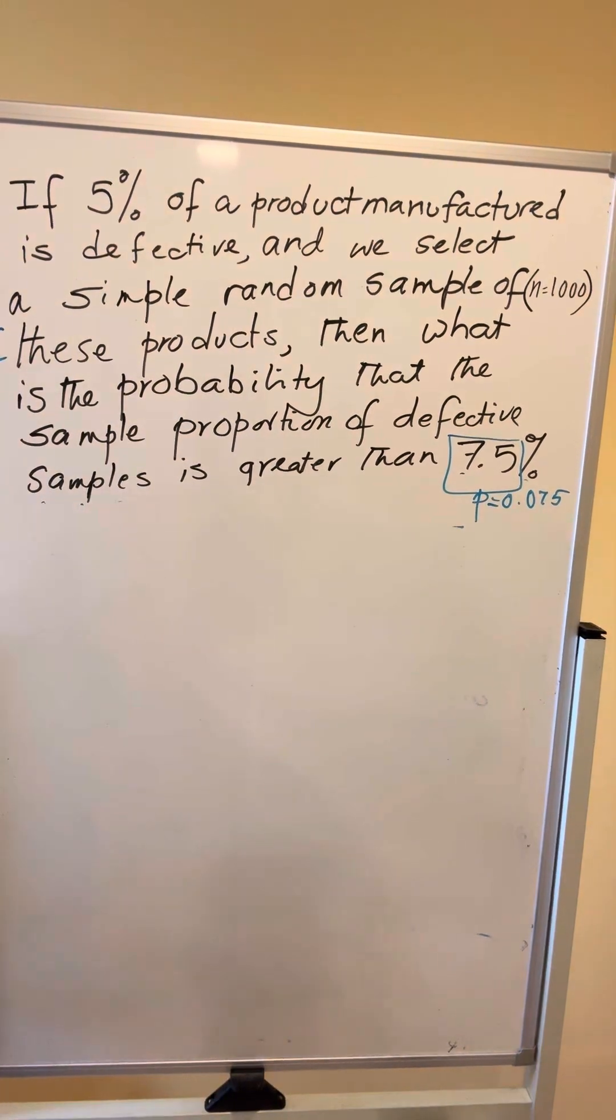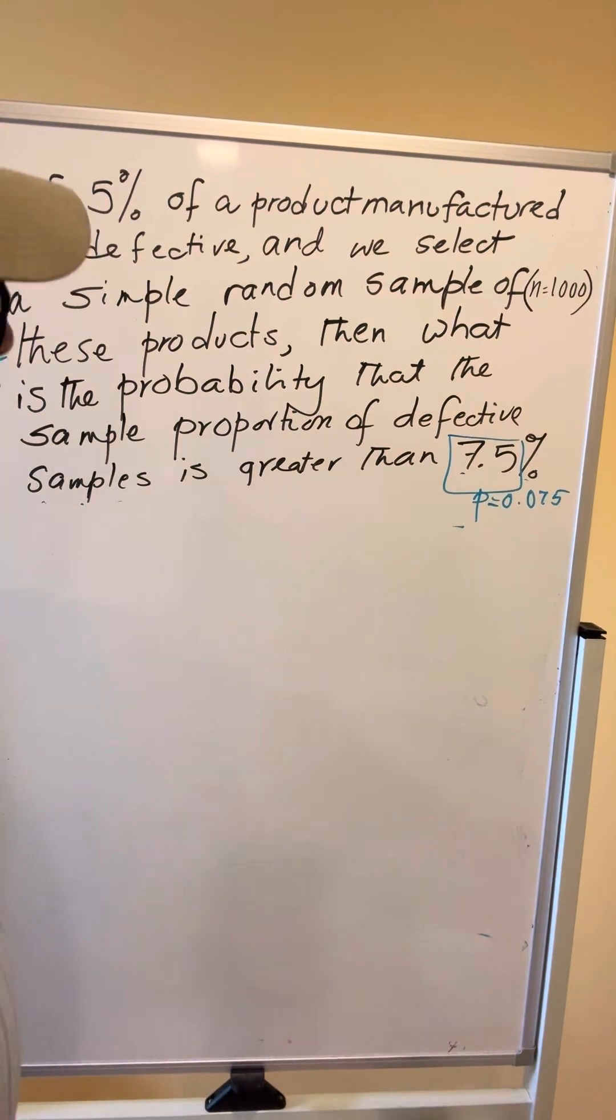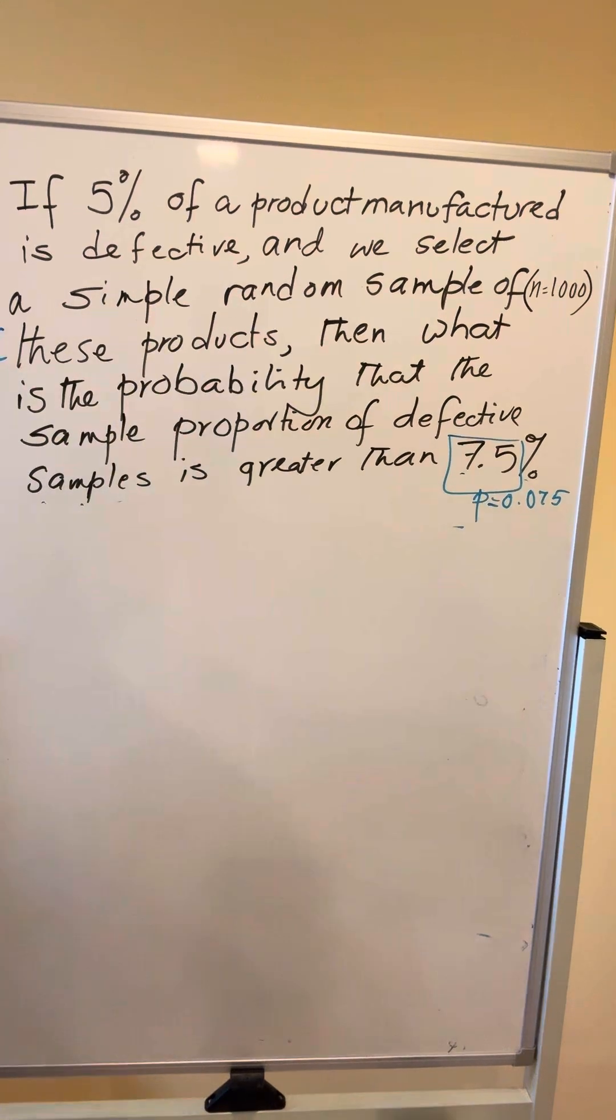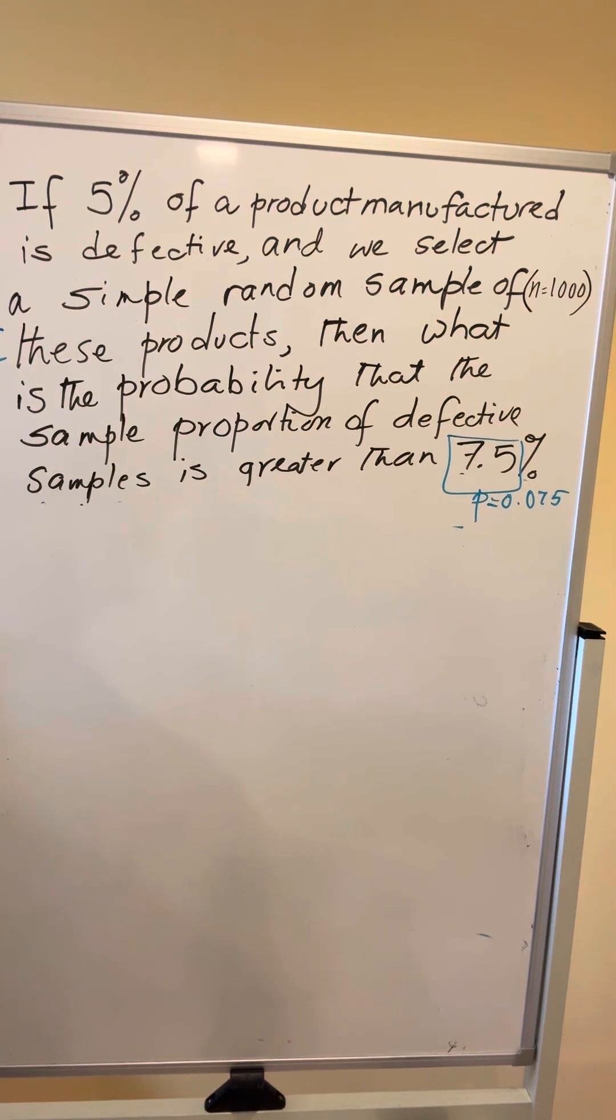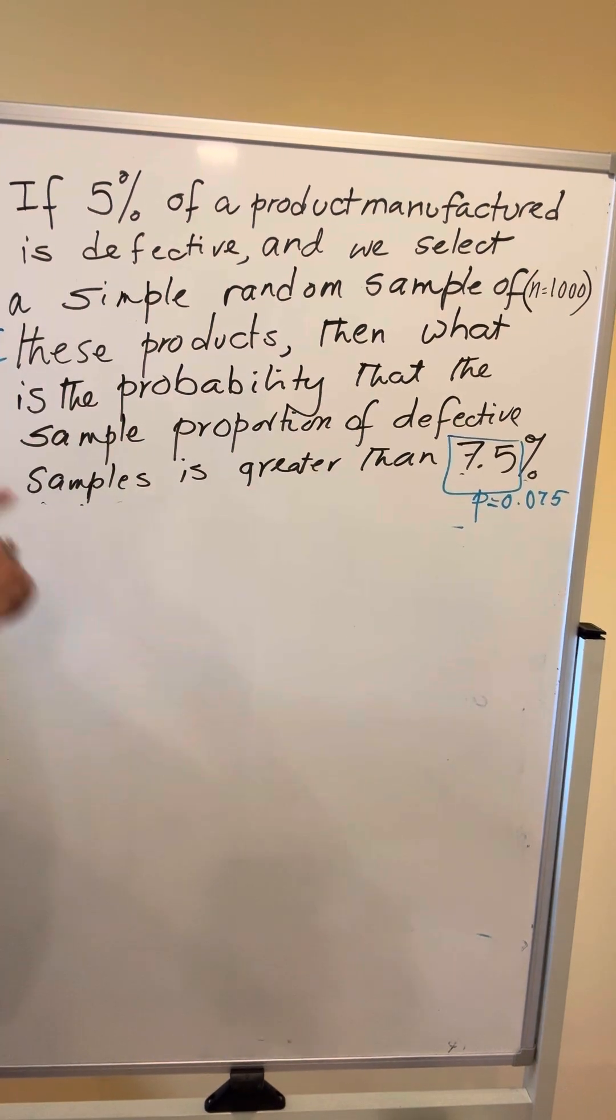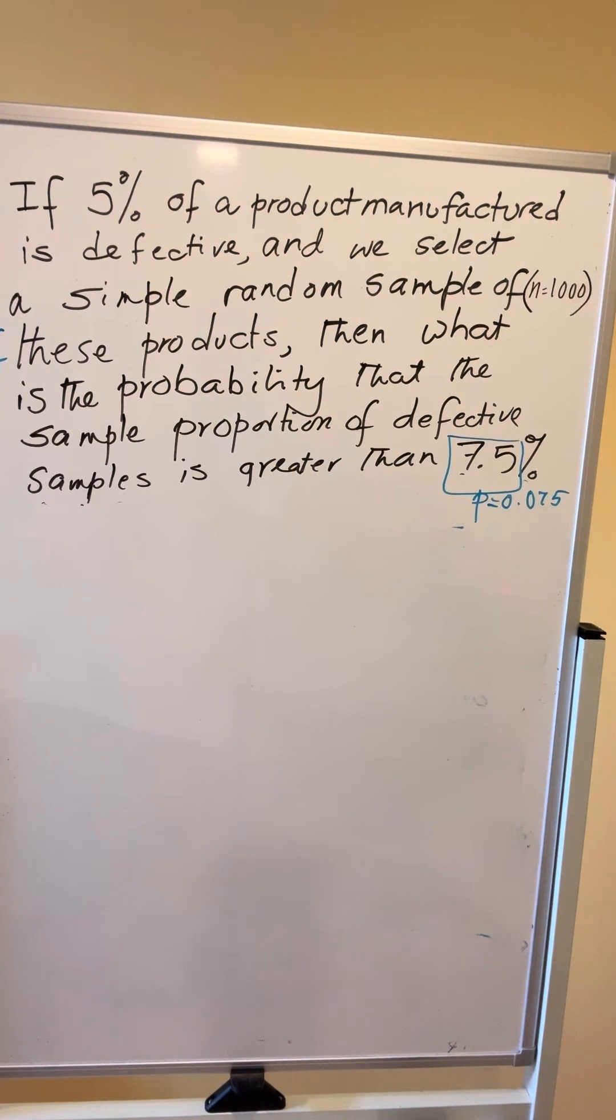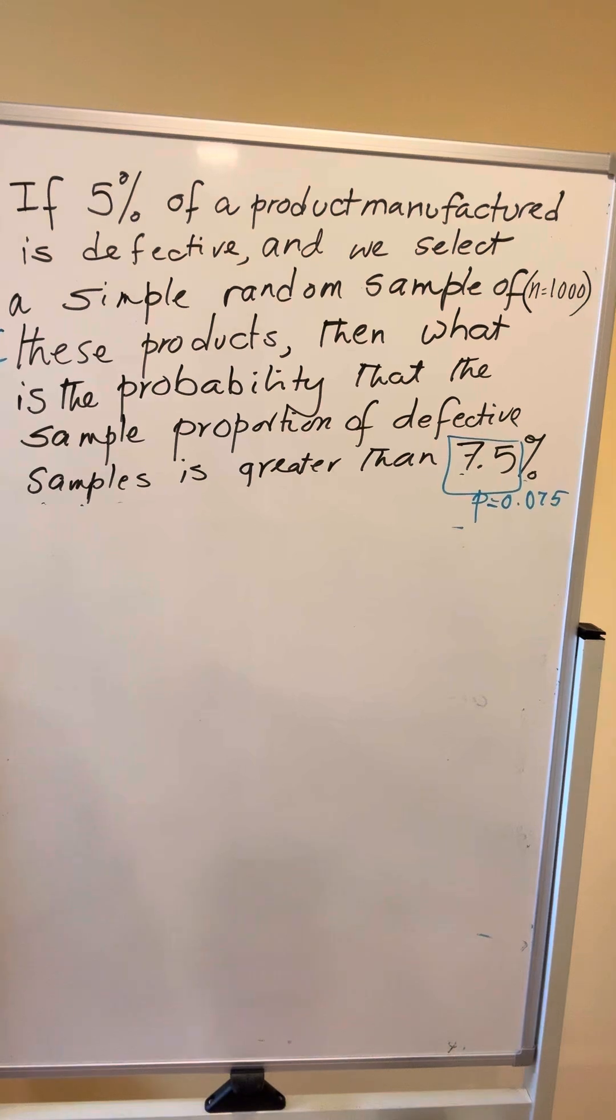So today we are going to work on a problem on Central Limit Theorem for Population Proportion. The problem states if 5% of a product manufactured is defective and we select a simple random sample of size 1000 of these products, then what is the probability that the sample proportion of defective sample is greater than 7.5%?